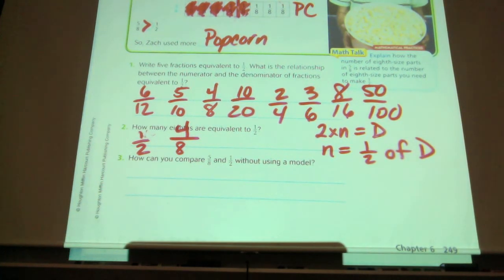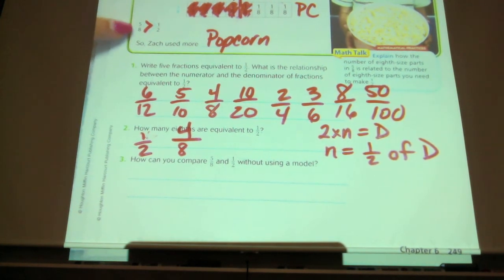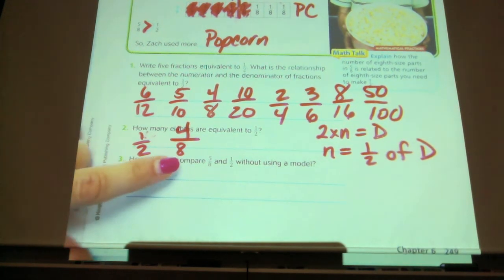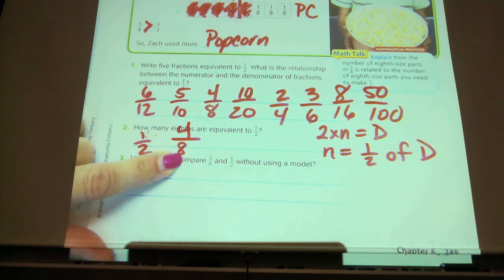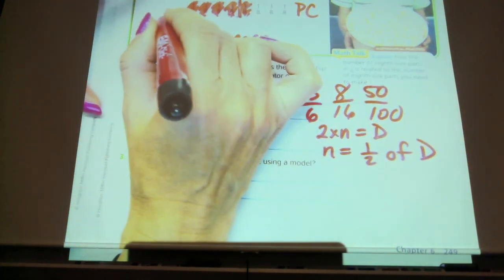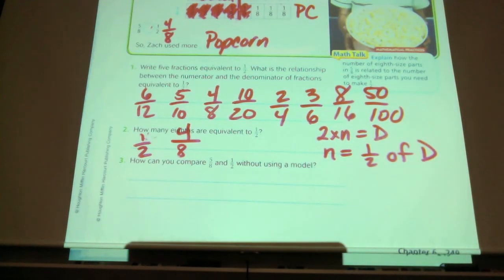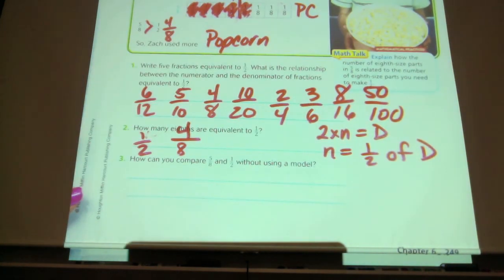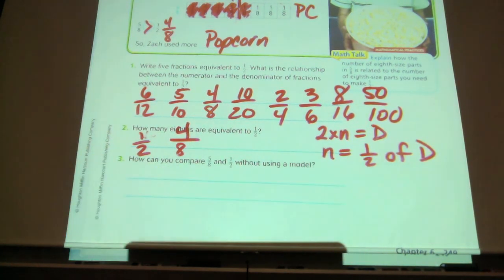So what they're showing you next is how you could have done this problem, five-eighths and one-half, comparing those two fractions without the model. And the reason is, I know how to make an equivalent fraction to a half using eights. So if I change my half to eights, can I compare these two fractions a lot more easily now? Yes. Because I know that five pieces that are worth an eighth is greater than four pieces that are worth an eighth. So I can see that that's that way.